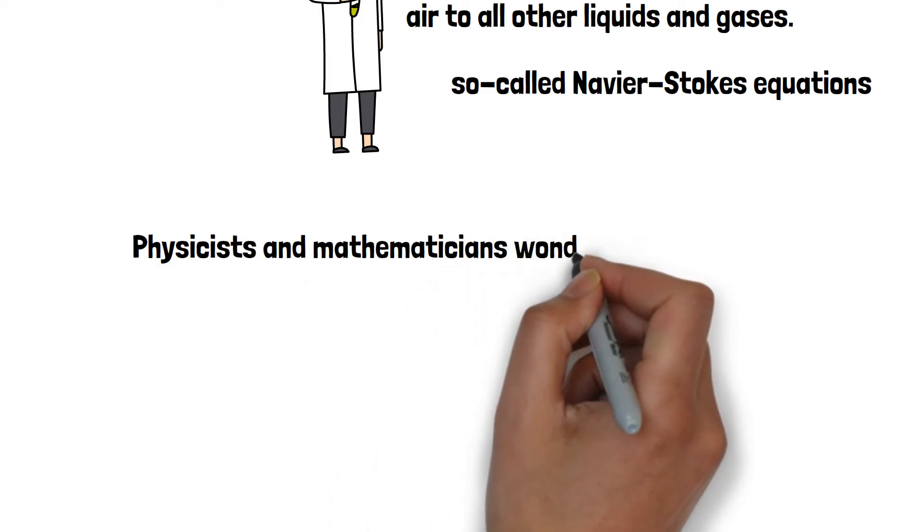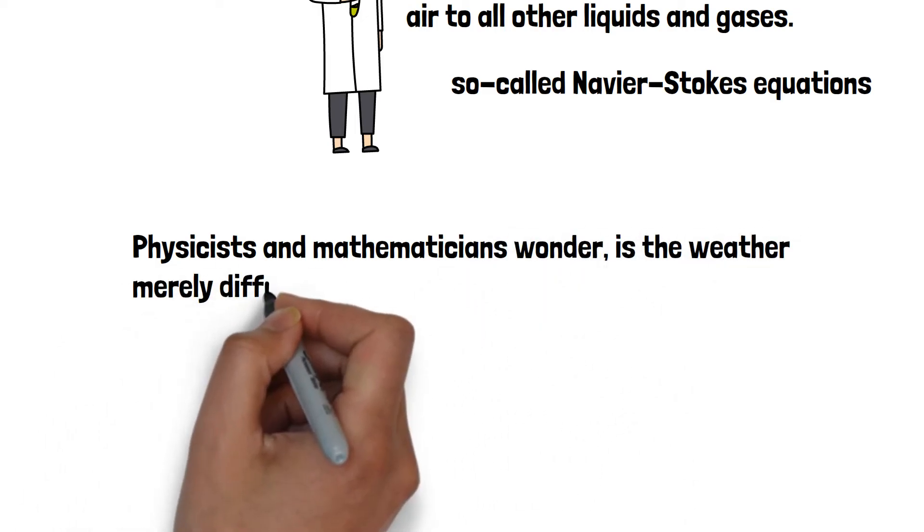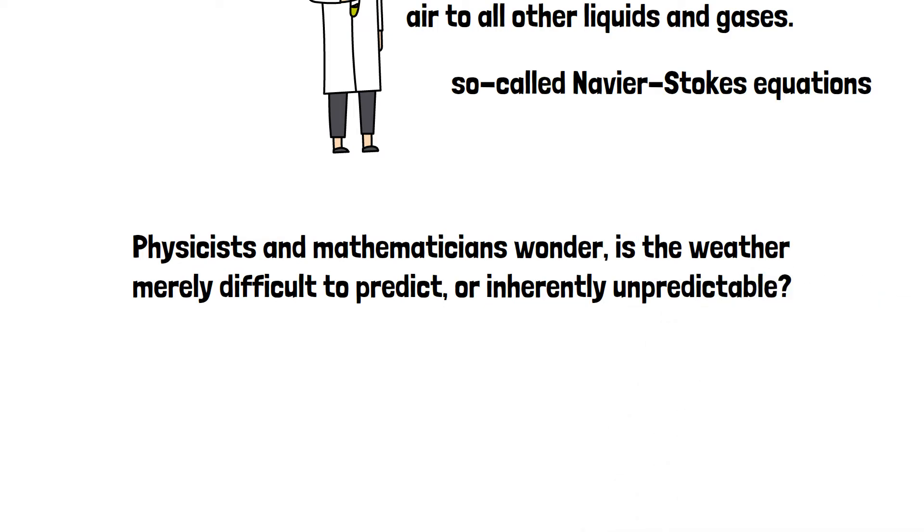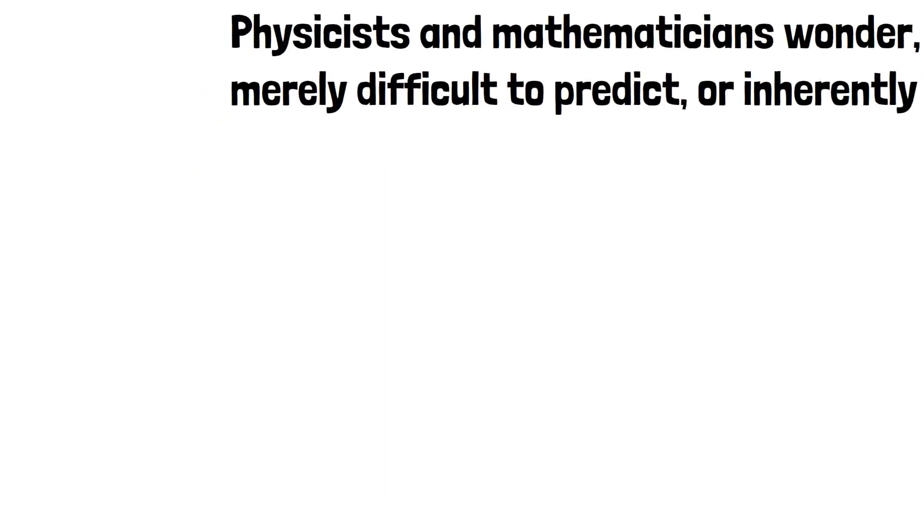Physicists and mathematicians wonder, is the weather merely difficult to predict, or inherently unpredictable? Does turbulence transcend mathematical description, or does it all make sense when you tackle it with the right math?